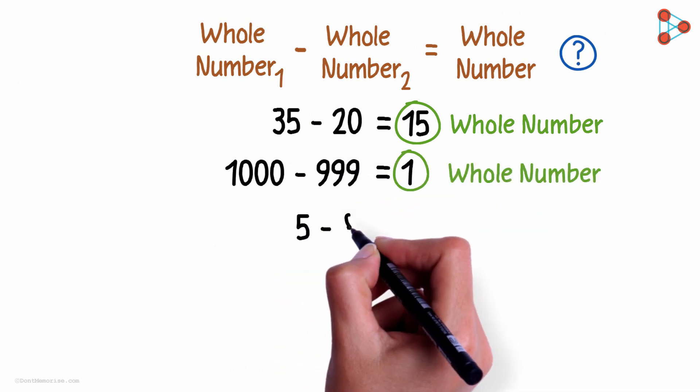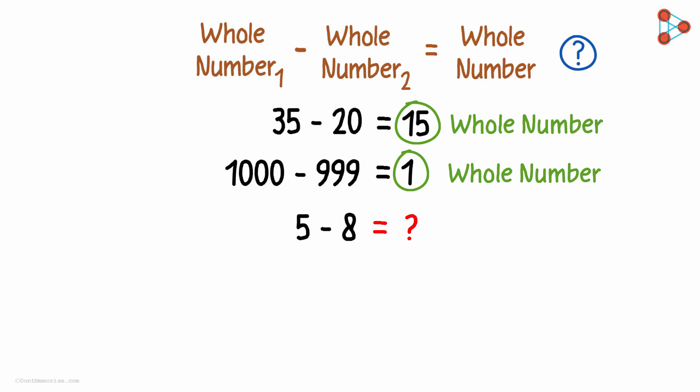What about 5 minus 8? What will we get when we subtract 8 from 5? Wait a moment. Can we even subtract 8 from 5? No, we can't do that. Even if we try to subtract them, here's what we get. A negative number. We are not talking about negative numbers now. You will learn that in the future lessons. But we know that this is certainly not a whole number. Hence we will term this subtraction as invalid.